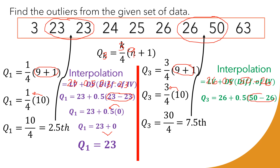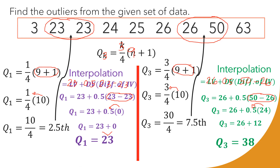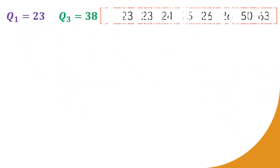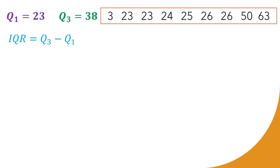Subtracting 50 − 26 gives us 24. That 24 multiplied by 0.5 gives us 12. Then 26 + 12 gives Q3 = 38. Moving to step three: IQR = Q3 − Q1 = 38 − 23 = 15.